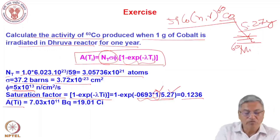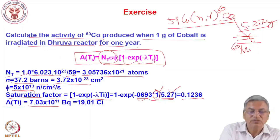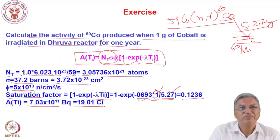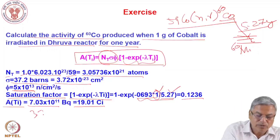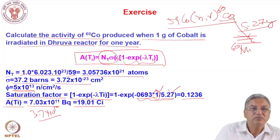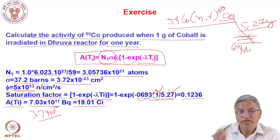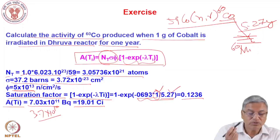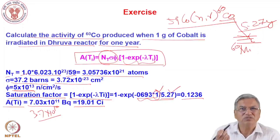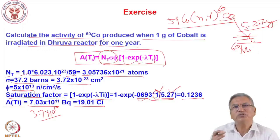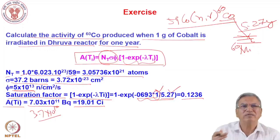So you irradiate 1 gram of cobalt in a reactor for 1 year and you get about 19 Curie of cobalt-60. That gives you an idea of the level of activity of cobalt-60 you will get if you irradiate a certain amount of cobalt in a reactor for a given amount of time.